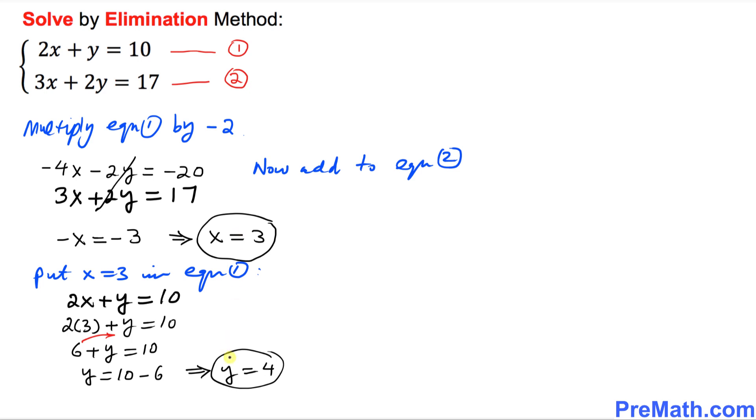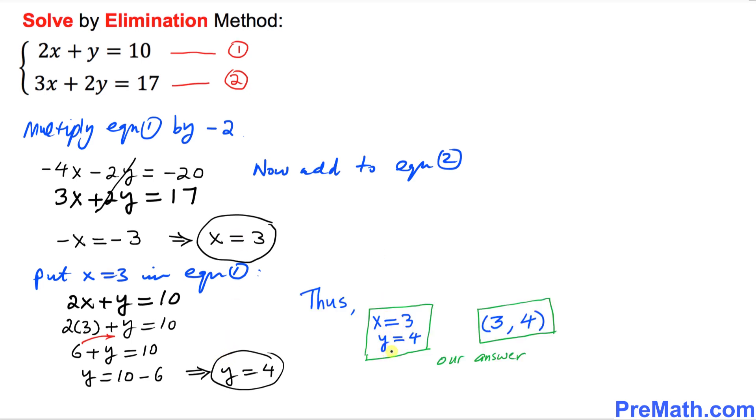So we got x equals 3 and y equals 4. Thus, x equals 3 and y equals 4 is our solution. Or you can put it in ordered pair form as (3, 4).